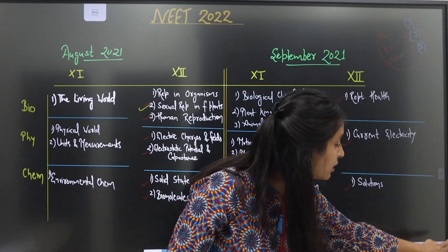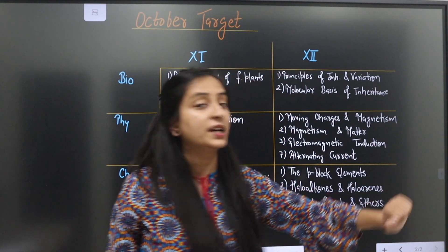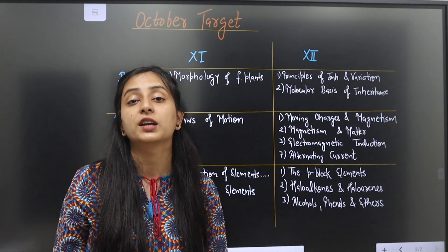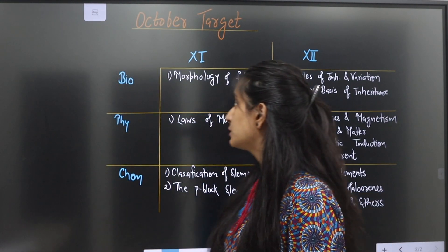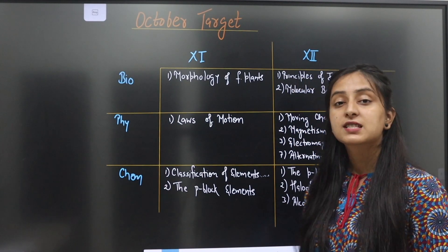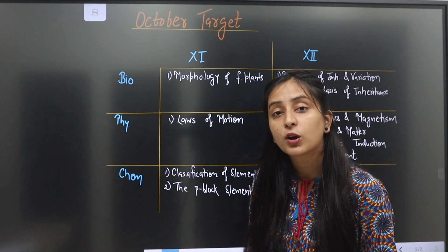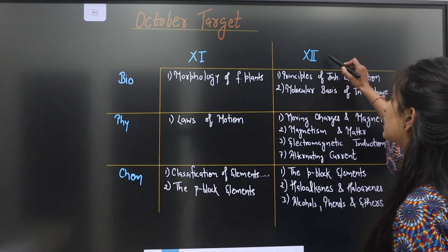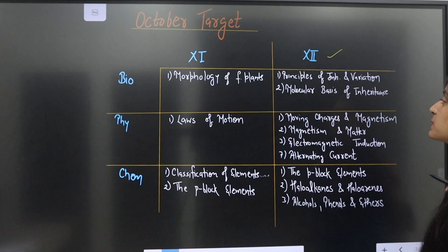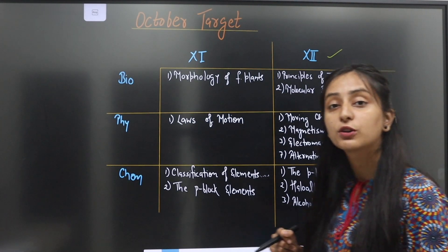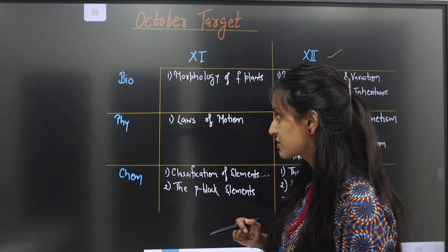So here comes October 2021 — the target for NEET 2022 preparation. Starting with Biology: Class 11 Biology — you will do Morphology of Flowering Plants. Class 12 Biology — Principles of Inheritance and Variation, and Molecular Basis of Inheritance.